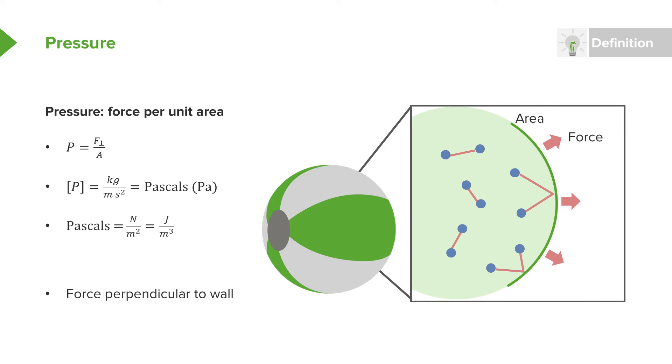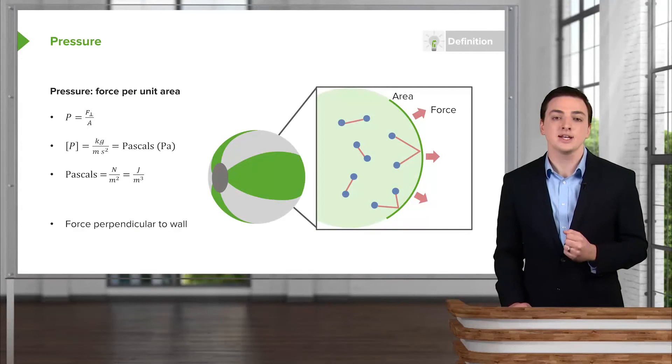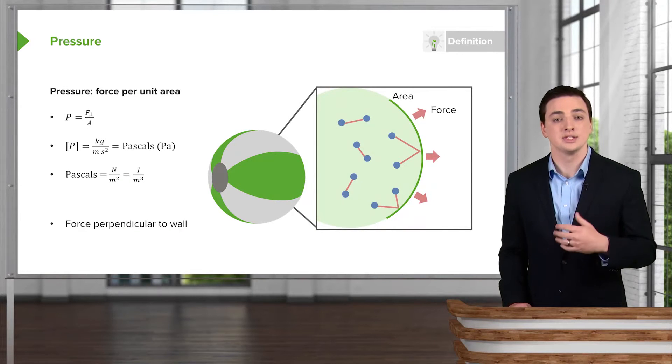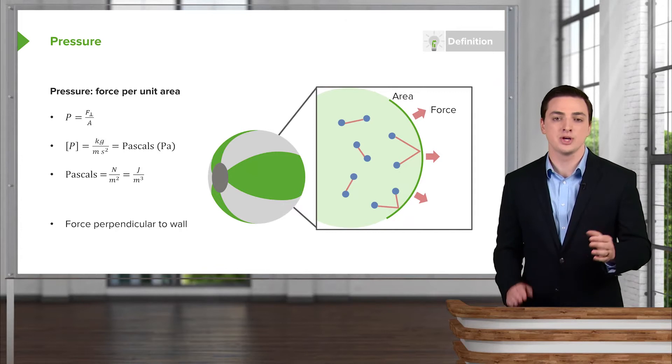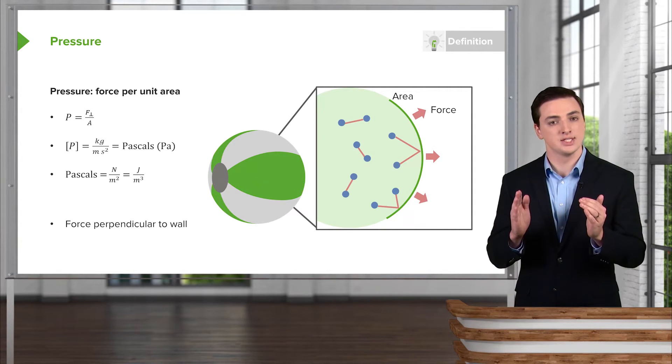The important thing also about this equation, you might notice that when I wrote pressure, I wrote pressure is force per unit area, but in the subscript to the F, I also put this little perpendicular symbol. Because in fact, when we're being very careful to analyze what pressure means, we only care about pressure perpendicular to the walls of the container.